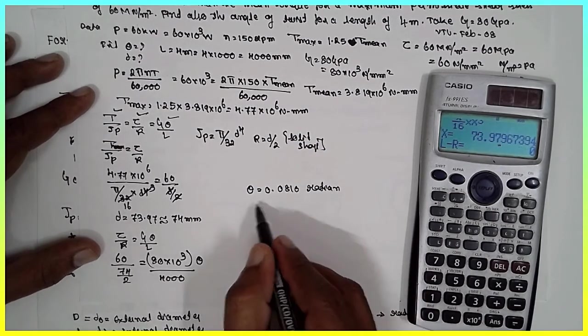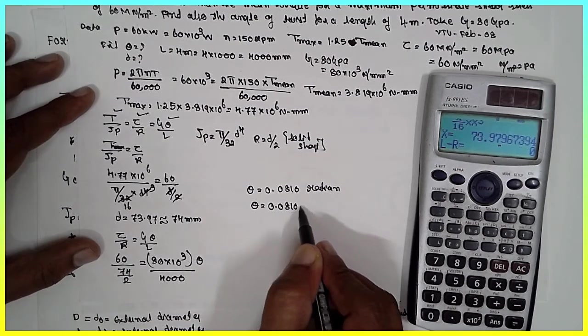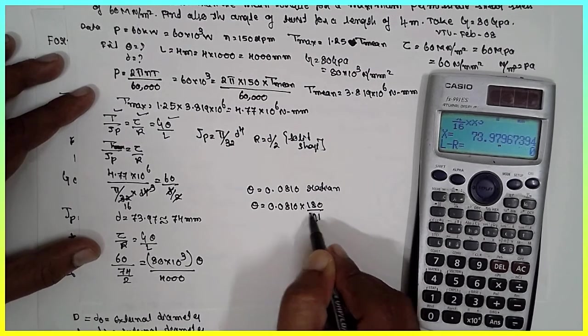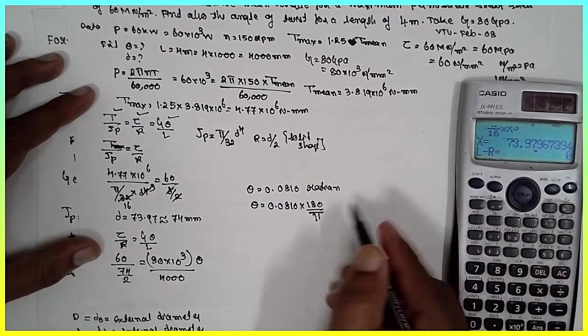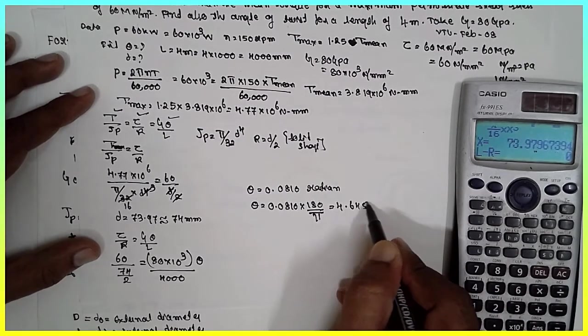If you want to convert in terms of degrees, theta equals 0.0810 times 180 divided by pi. It gets converted into degrees. Answer is 4.645 degrees.